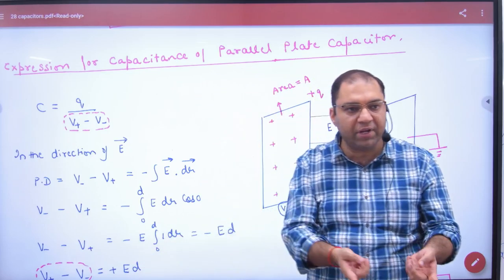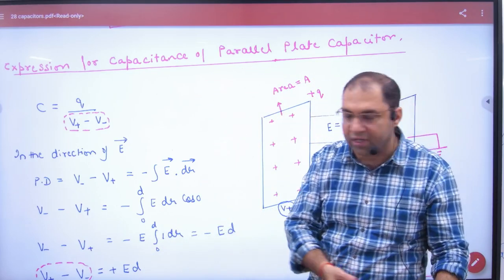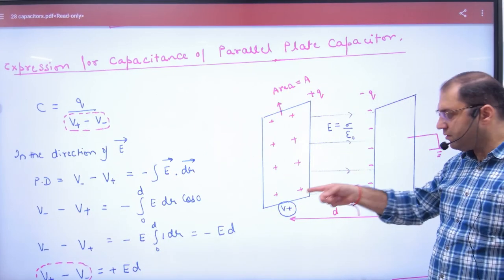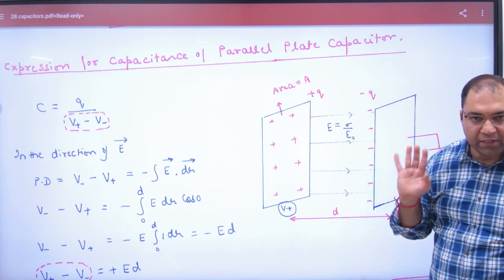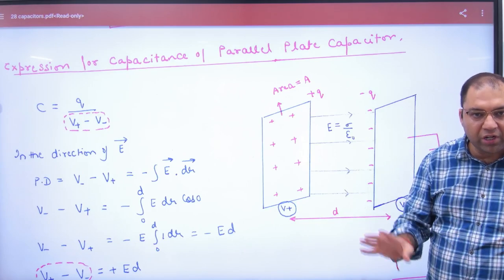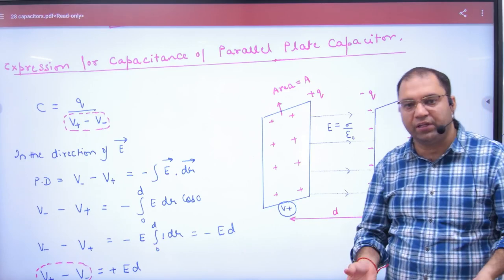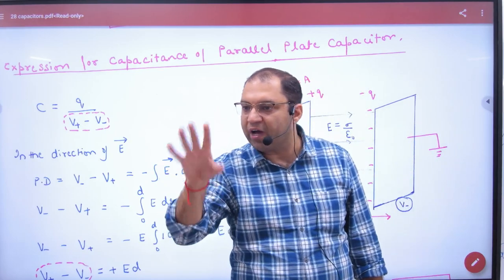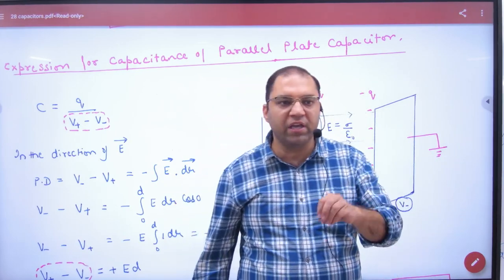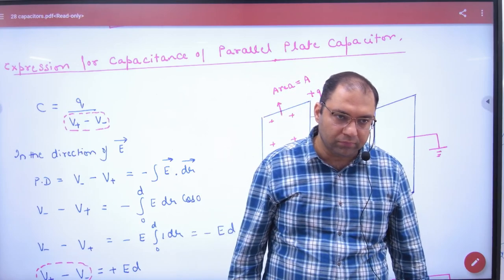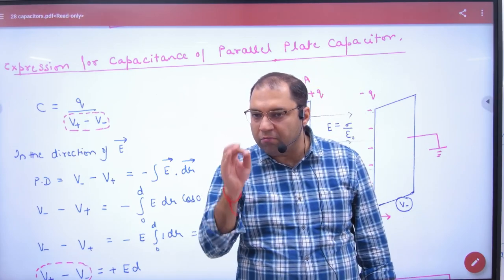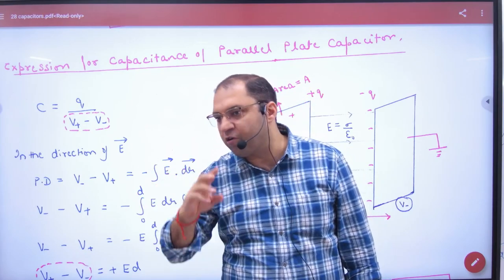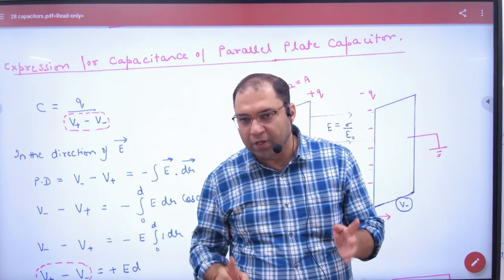To find the capacitance of a parallel plate capacitor, you have to find the potential difference V+ - V-. Now to find potential difference, we have several ways. First is the Q/(4πε₀R) formula. But the problem is that this is for a point charge, and a sheet is not a point charge, so this formula fails. Then I have another result.